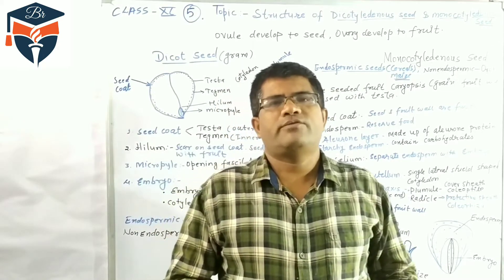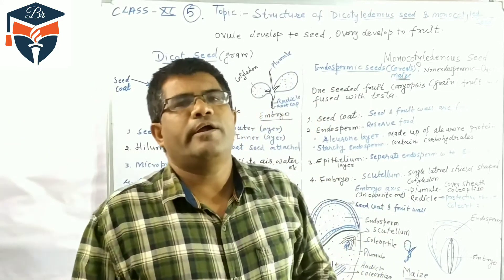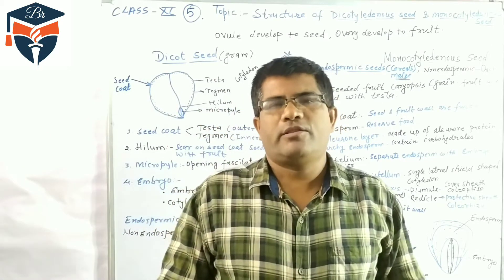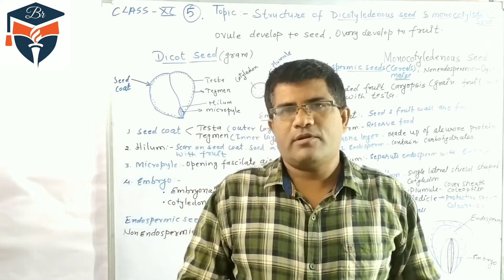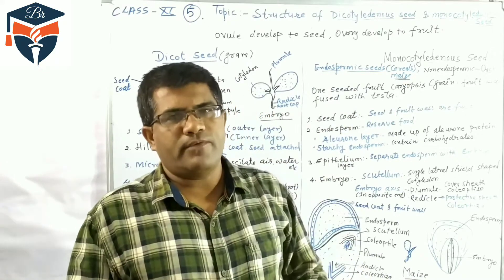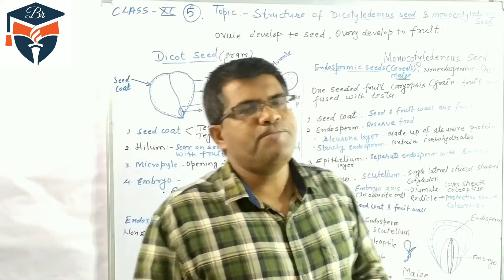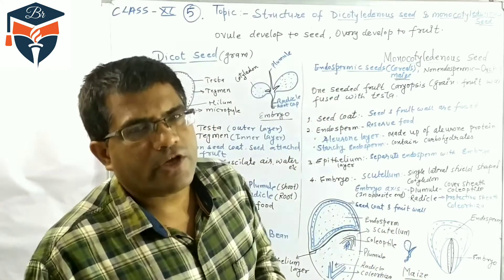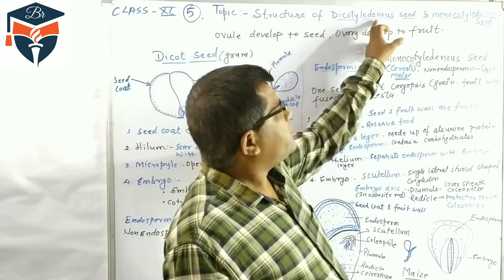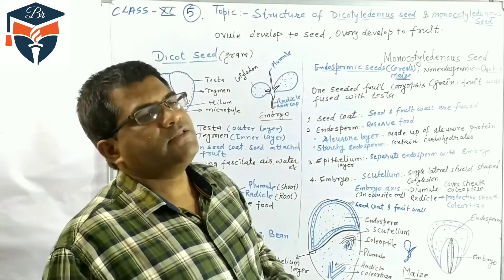Hello students, myself Om Prakash Dray. Today we are going to study regarding Class 11th Chapter Number 5, Morphology in Flowering Plants. We are discussing the structure of dicotyledonous seed and monocotyledonous seed.